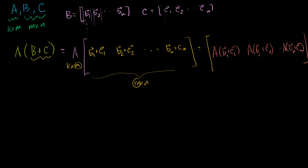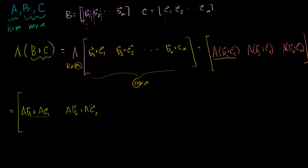So this is going to be equal to A times the column vector B1 plus C1, the second column is A times B2 plus C2, all the way to A times the column vector Bn plus Cn. We know that matrix vector products exhibit the distributive property, so each of these columns can be rewritten. The first column becomes A times B1 plus A times C1, the next one is AB2 plus A times C2, and the nth column is A times Bn plus A times Cn.